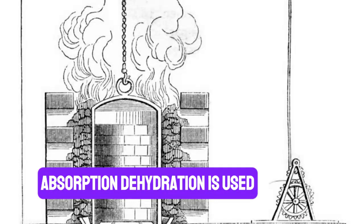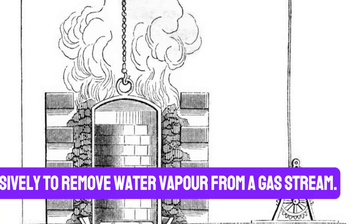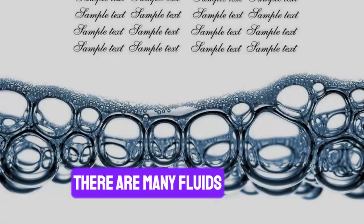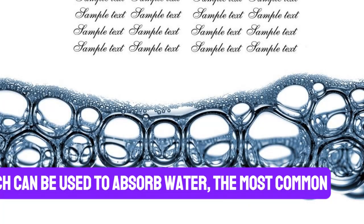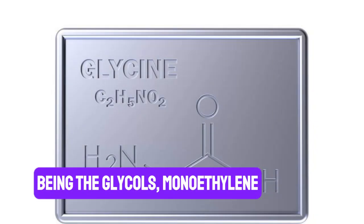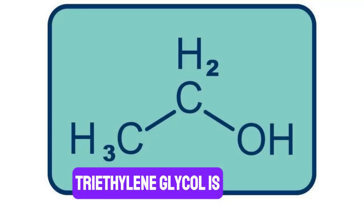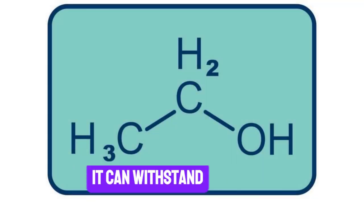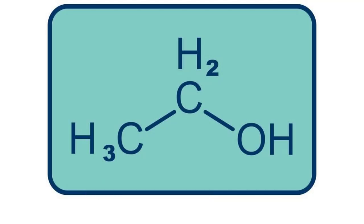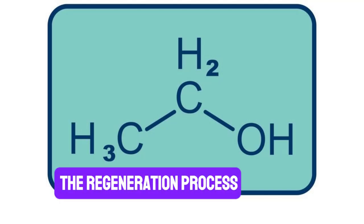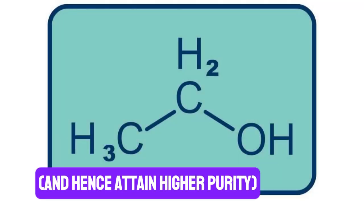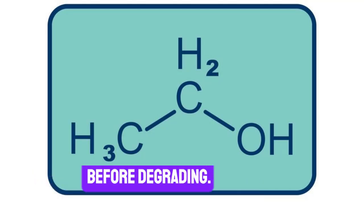Absorption dehydration is used extensively to remove water vapor from a gas stream. There are many fluids which can be used to absorb water, the most common being the glycols: monoethylene glycol (MEG), diethylene glycol (DEG), and TEG. Triethylene glycol is normally used as it can withstand higher temperatures in the regeneration process, and hence attain higher purity before degrading.